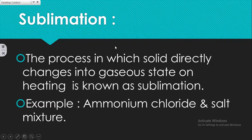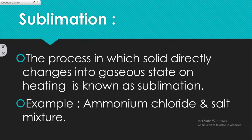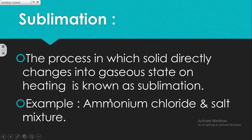The method used to separate volatile substances from non-volatile substances is known as sublimation. In this process, a solid directly changes into a gaseous state on heating. For example, camphor, naphthalene balls, and iodine vaporize at room temperature — those solids directly convert into vapor. For instance, an ammonium chloride and salt mixture can be separated by this method.